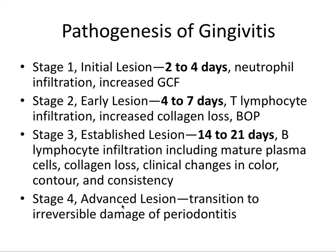Stage 4 is the advanced lesion — this is where we get transition to irreversible damage. The first three stages are the reversible stages of gingivitis. Once we get bone loss at stage 4, that irreversible damage means we've transitioned to periodontitis, where we have irreversible tissue damage.